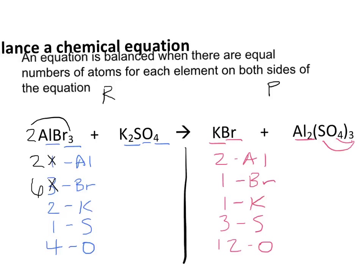Now, although I did match the number of Aluminum on each side, you can see that it threw off our Bromine. I now have six Bromine on the reactant side, and I only have one Bromine on the product side.